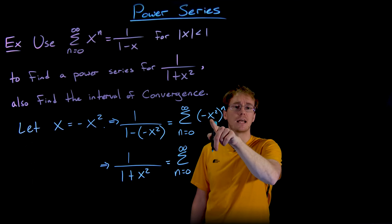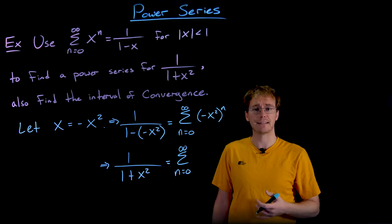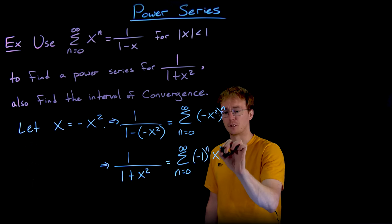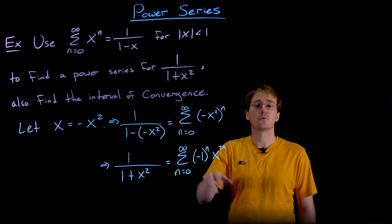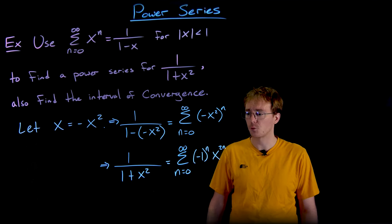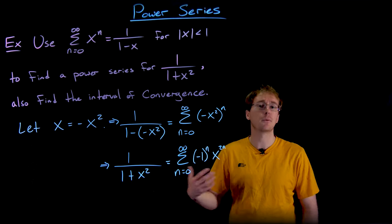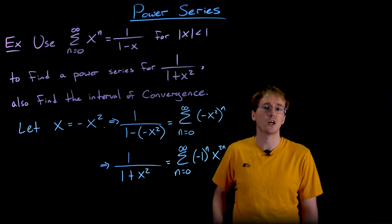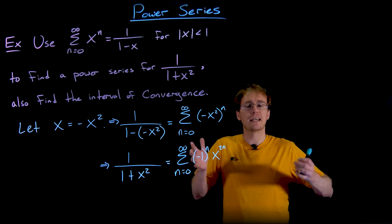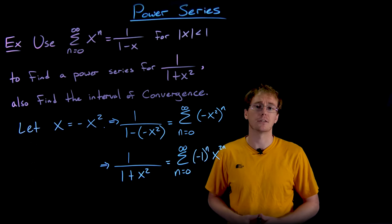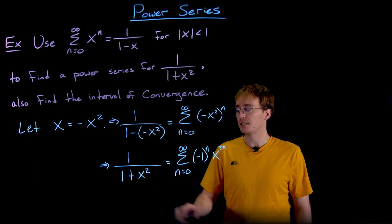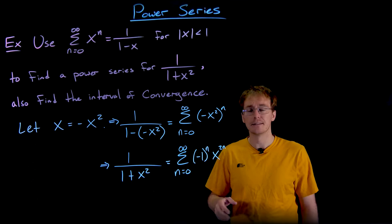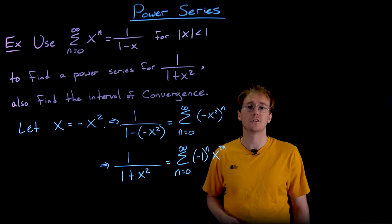We can simplify by writing (-x²)ⁿ as (-1)ⁿ times (x²)ⁿ, which equals (-1)ⁿ times x to the power of 2n. This step reveals that our power series for 1/(1+x²) is actually an alternating series — the sum from n equals 0 to infinity of (-1)ⁿ times x^(2n) — and we can apply everything we know about alternating series to it.